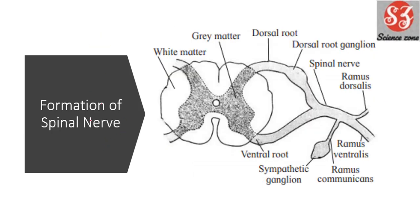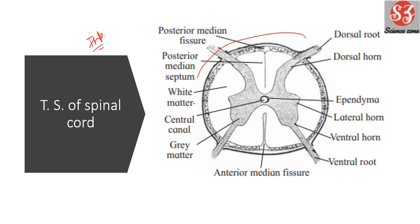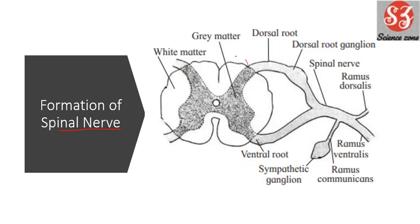Next is formation of spinal nerve. When a question on spinal nerve comes, you need to draw this diagram. The spinal cord is shown up to a point, and then you extend it slightly to show ramus dorsalis, ramus communicans, and ramus ventralis — these three parts you need to indicate.